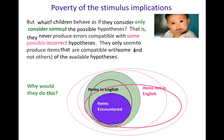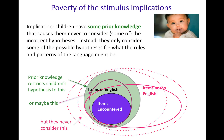Why would they do this? The answer is that children must have some prior knowledge — some knowledge that's not coming just from the data — that causes them never to consider some of these incorrect hypotheses. Instead, they only consider some of the possible hypotheses for what the rules and patterns of the language might be. Prior knowledge is restricting children's hypotheses to these chunks right here — these three — but they never consider these dotted ones, even though they're perfectly compatible with the data.